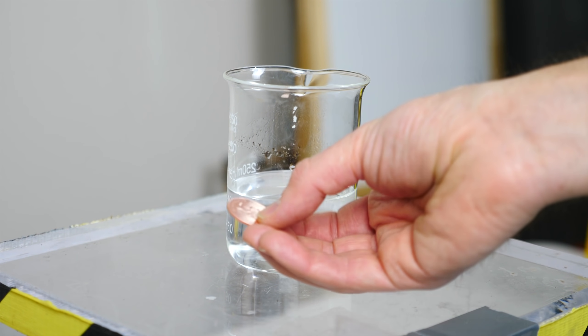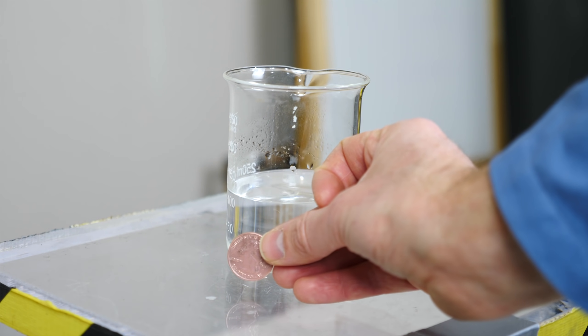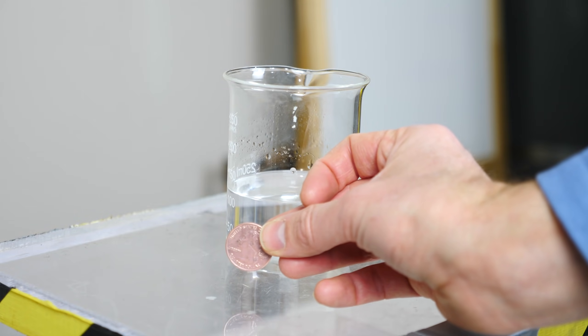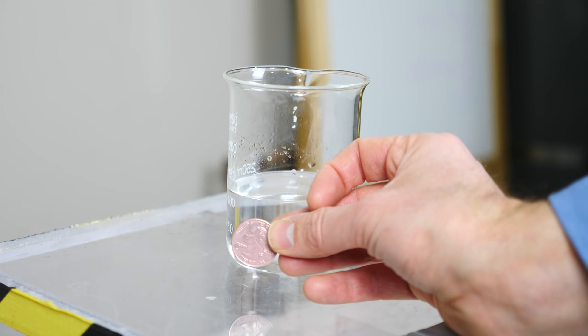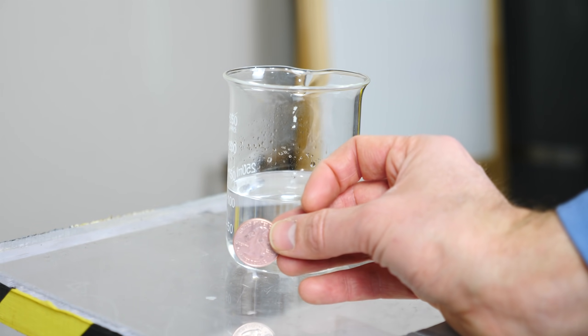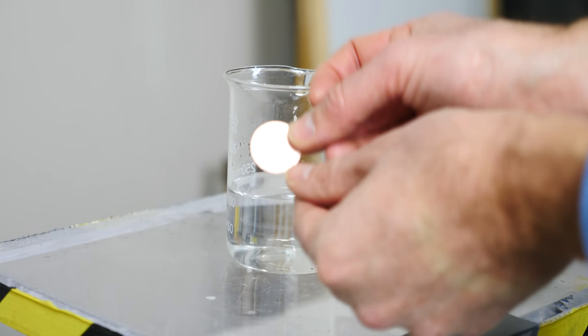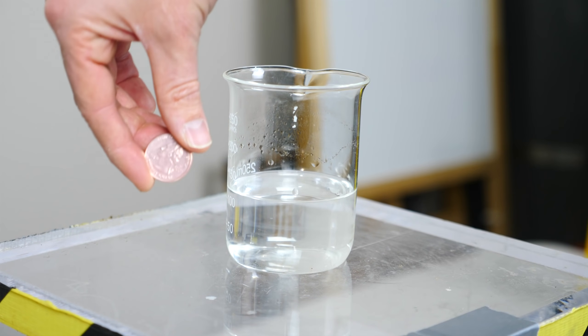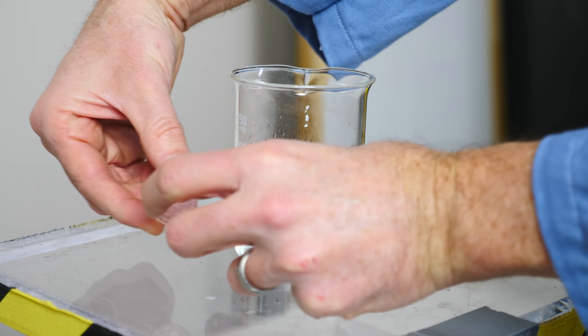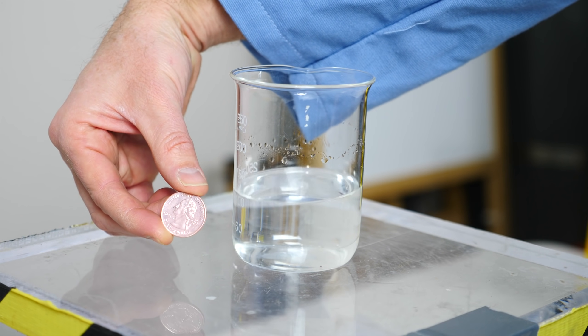So where does that double boiling effect come from? Well that actually comes from the Leidenfrost effect. The Leidenfrost effect is when something is so hot that it instantly vaporizes the liquid or anything that is touching, and so it creates a pocket of gas around it. And that pocket of gas actually insulates the hot thing and so it doesn't cool down as much.